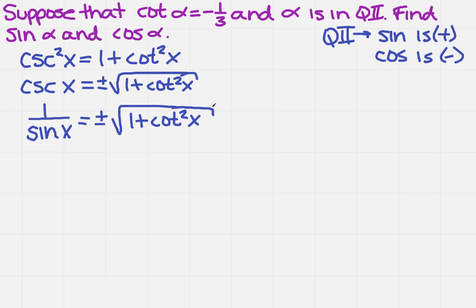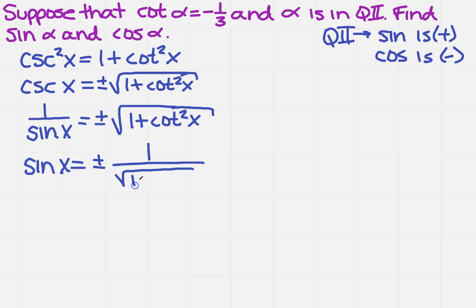Now I need to solve for sine of x. That's going to give me sine of x equals plus or minus 1 over the square root of 1 plus the cotangent squared of x. I have my cotangent value, so I can actually figure that out.